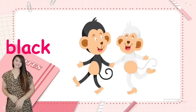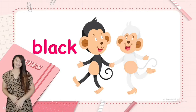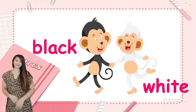Next, we have black and white. Black monkey, white monkey. So black and white are opposite ways. Please repeat after me: black, white.